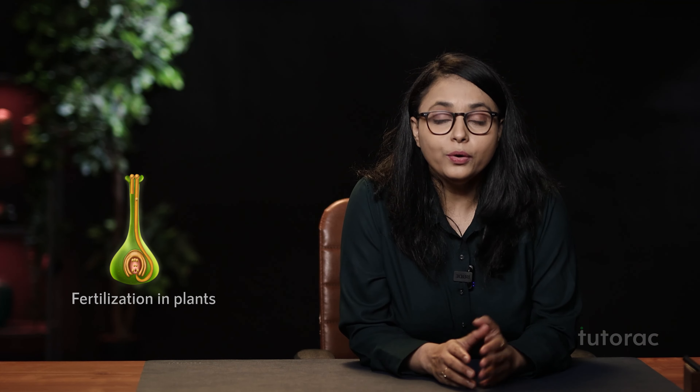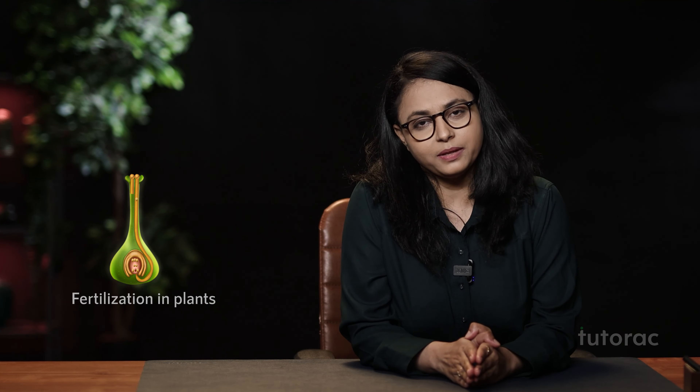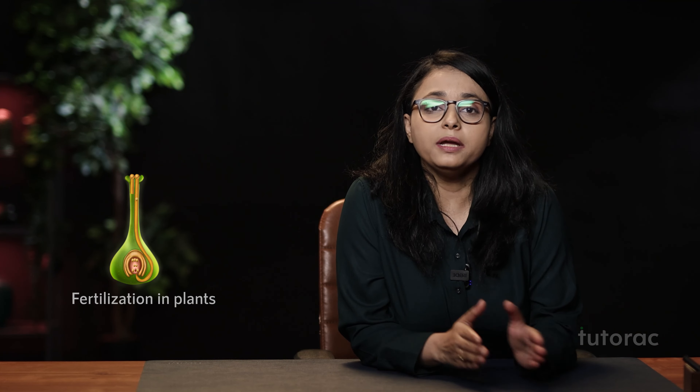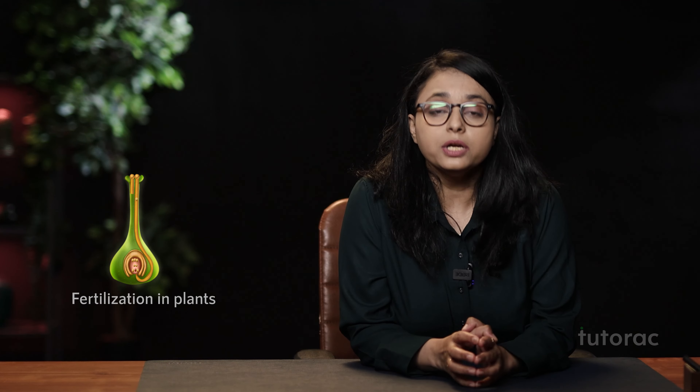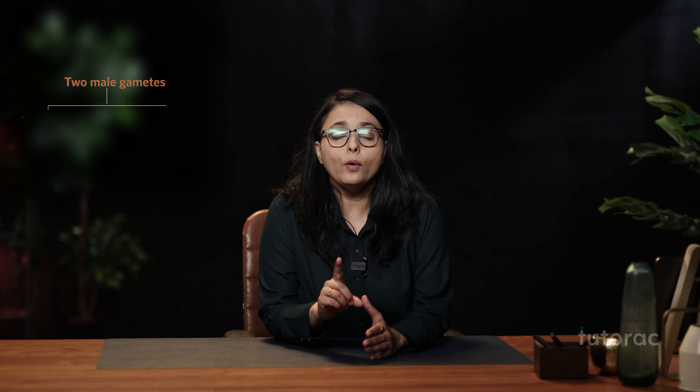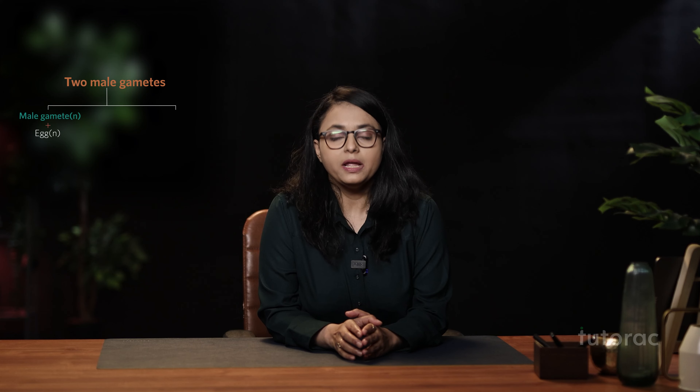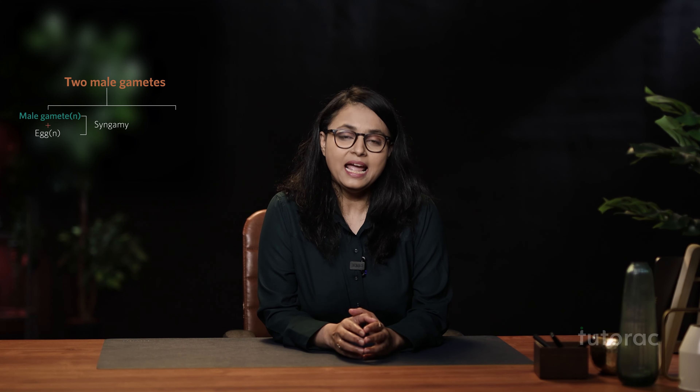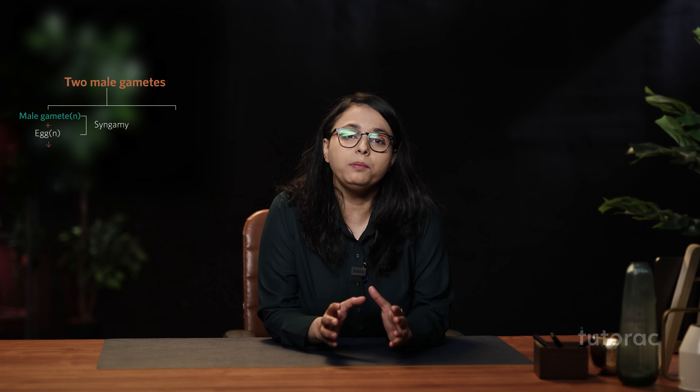Now we will discuss fertilization in plants. In plants there is a double fertilization. In the previous topic we discussed pollination, in which the male gamete is transferred from the anther to the stigma. Once pollen grains land on the stigma, a pollen tube is formed carrying two male gametes. These move through the stigma and style, finally reaching the ovary. One male gamete fuses with the female gamete — a process known as syngamy — resulting in a diploid zygote.